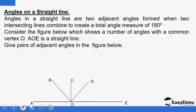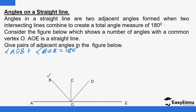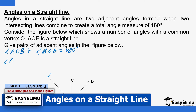The first angle property is called angles on a straight line. Angles on a straight line are two adjacent angles formed when two intersecting lines combine to form a total angle measure of 180 degrees. For example, angle AOB plus angle BOE equals 180 degrees. We also have angle AOC — these are adjacent angles that sum up to 180 degrees.